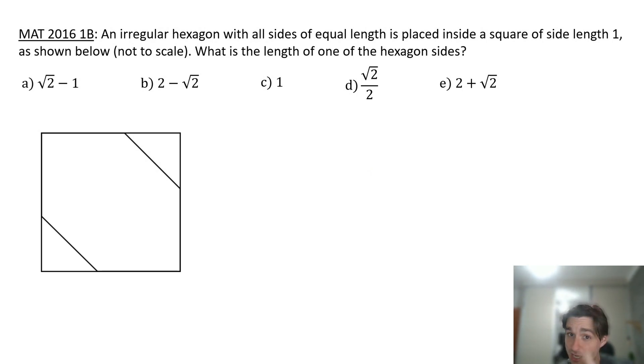If you solve this question, you have a good chance to go into Oxford University. Let's go. An irregular hexagon with all sides of equal length is placed inside a square of side length one as shown below. What is the length of one of the hexagon sides?